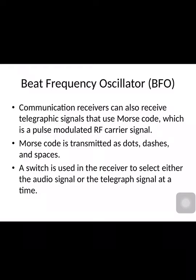There is a switch used in the receiver to select either audio signal or telegraph signal. This unit is called the Beat Frequency Oscillator. Communication receivers can also receive telegraphic signals, which are Morse code — a pulse modulated RF carrier signal. So to transmit and receive these Morse codes, we need to use the Beat Frequency Oscillator.